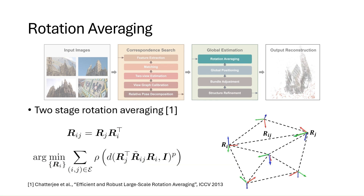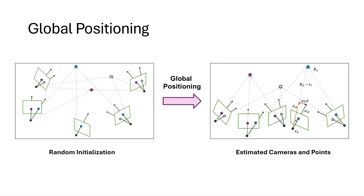In the global estimation step, we focus on estimating camera poses and 3D points from the processed inputs. To estimate camera rotation, we perform rotation averaging, enforcing consistency between global and local estimations. After fixing the rotation, we jointly estimate the positions of cameras and 3D points, a step we refer to as global positioning. This step is crucial for enhancing the robustness of our method.